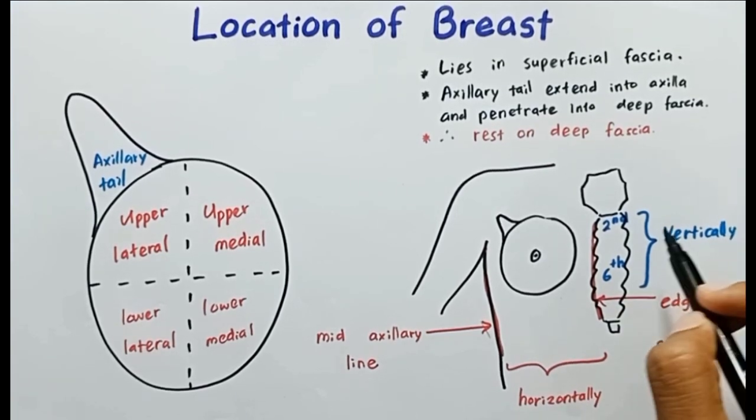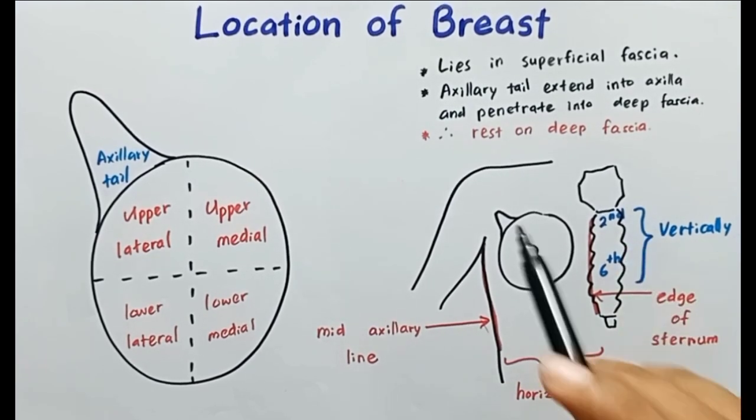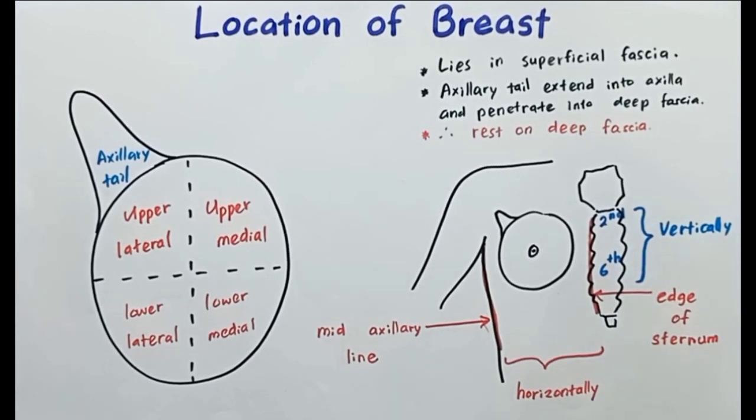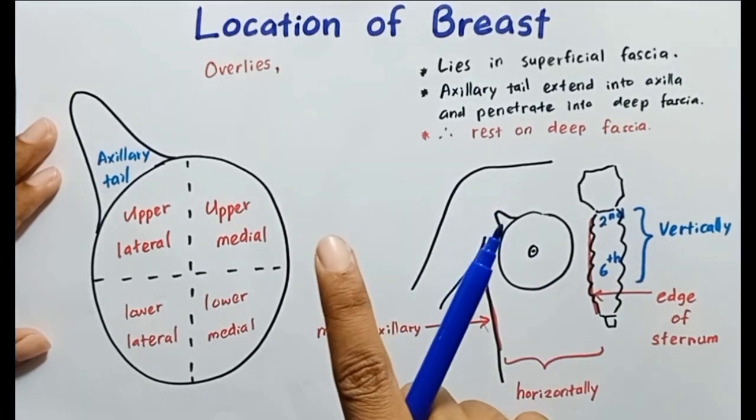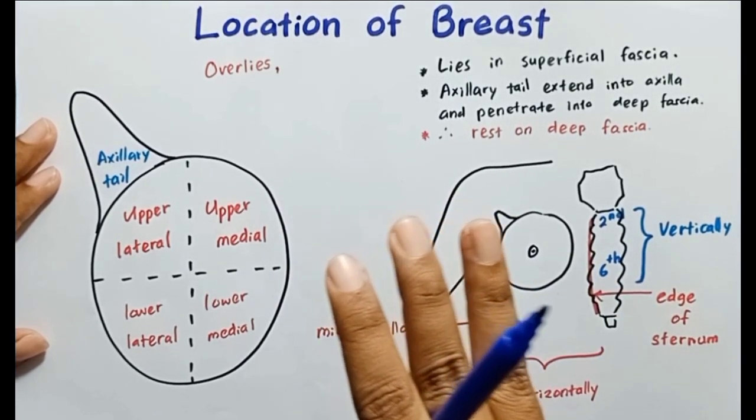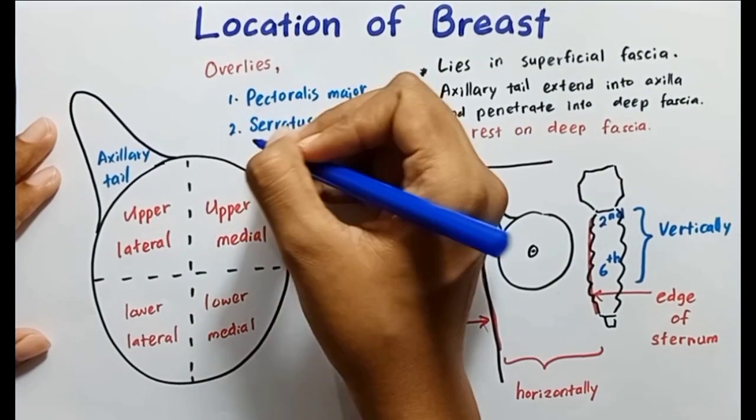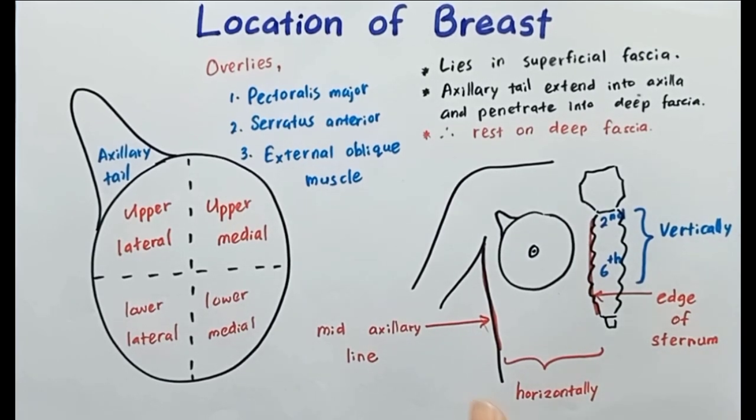The breast is horizontally located between the mid-axillary line and edge of the sternum, vertically between the second rib and sixth rib. So the breast overlies several muscles. It overlies the pectoralis major muscle, serratus anterior muscle, and external oblique muscle. So in the next video, we will talk about the blood supply and nerve innervation of the breast.